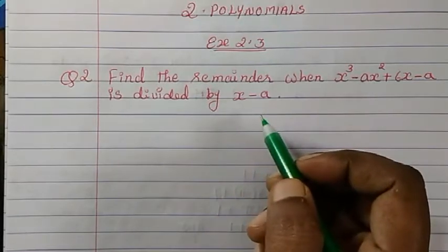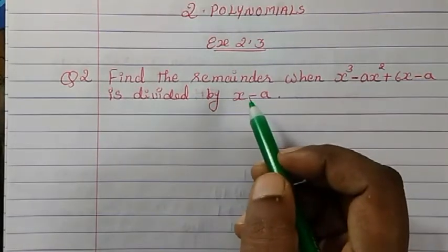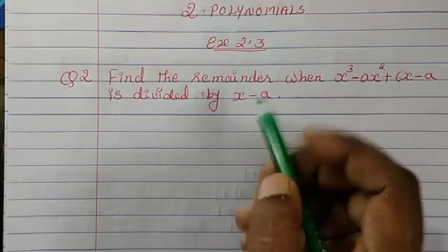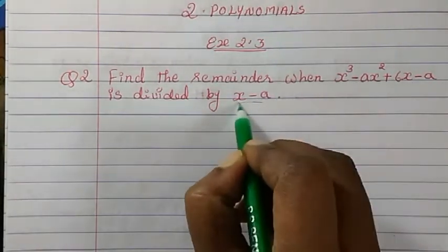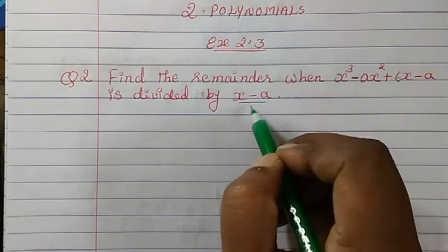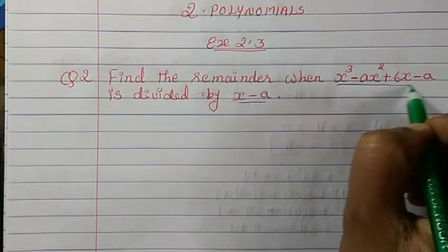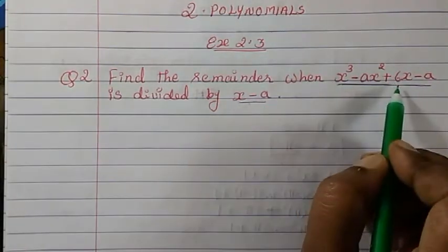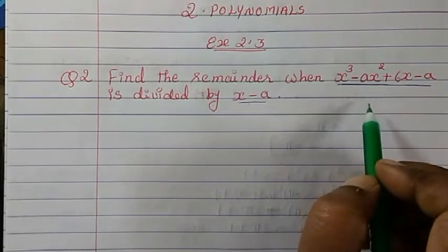We have already learned how to do this in Question 1. From the linear polynomial we have to get the value of x, and that value of x we will substitute here. Wherever x is there, the value of x we will place and then we will get the answer.